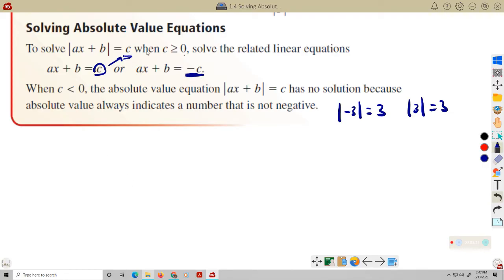If c is less than 0, if c is negative, we can have no solution, because absolute values are always positive. Let's take a look at some examples and see what this means in practice.